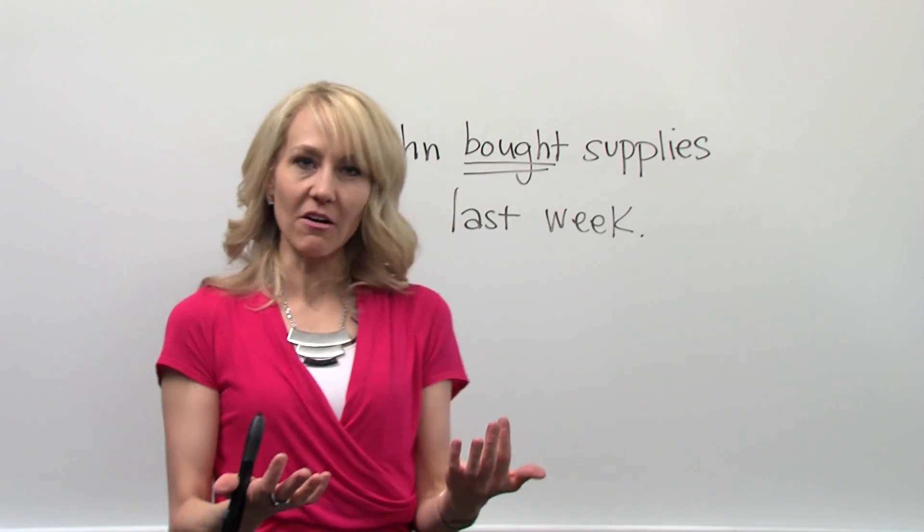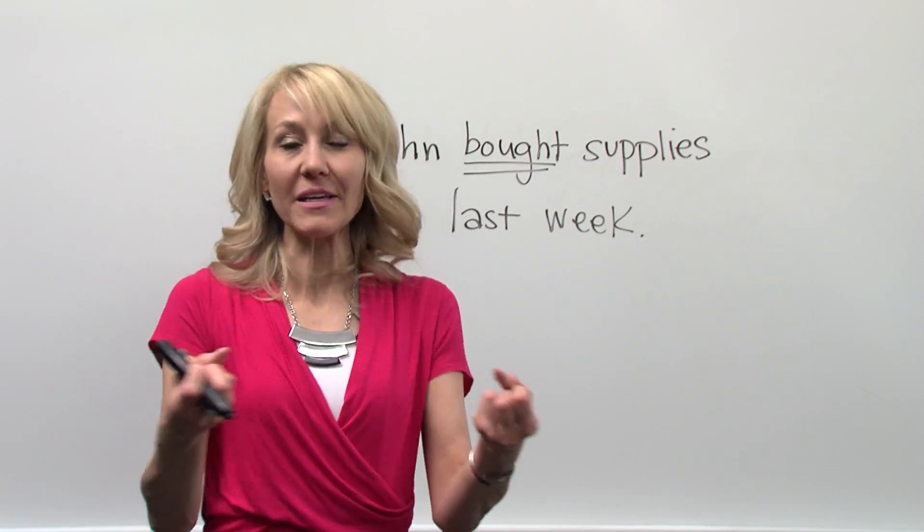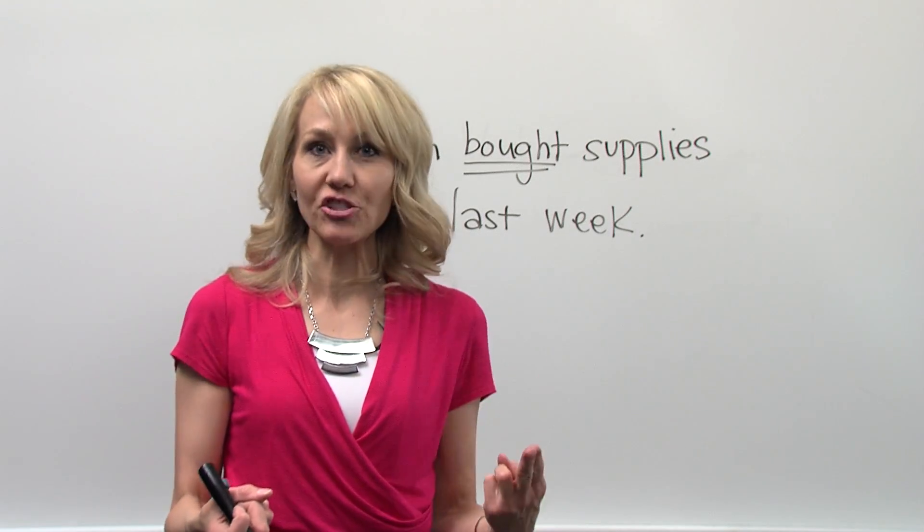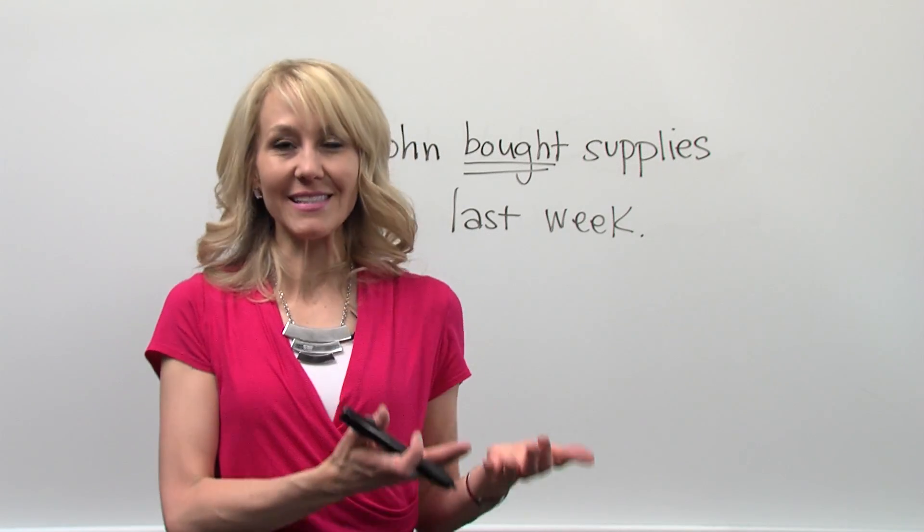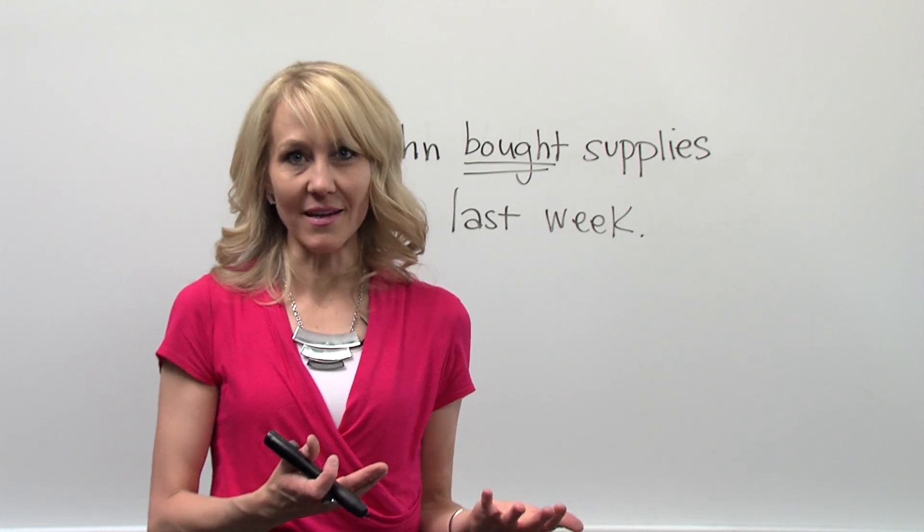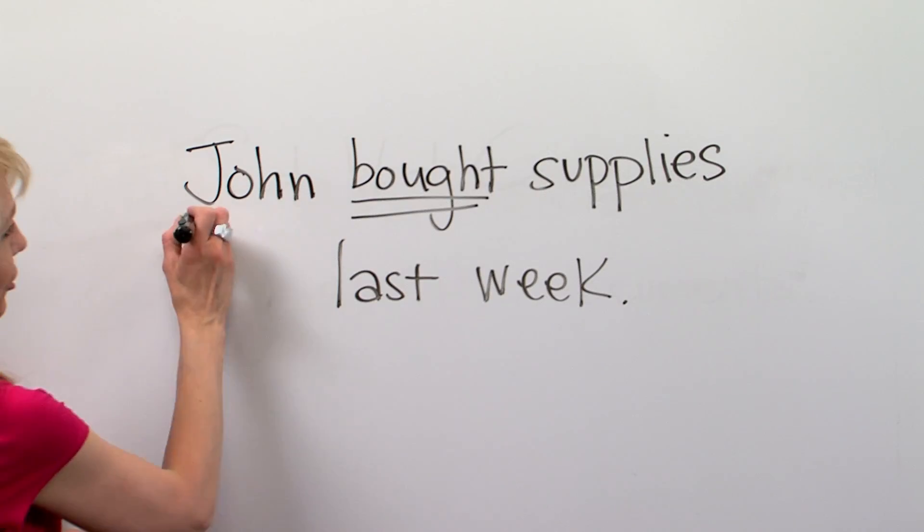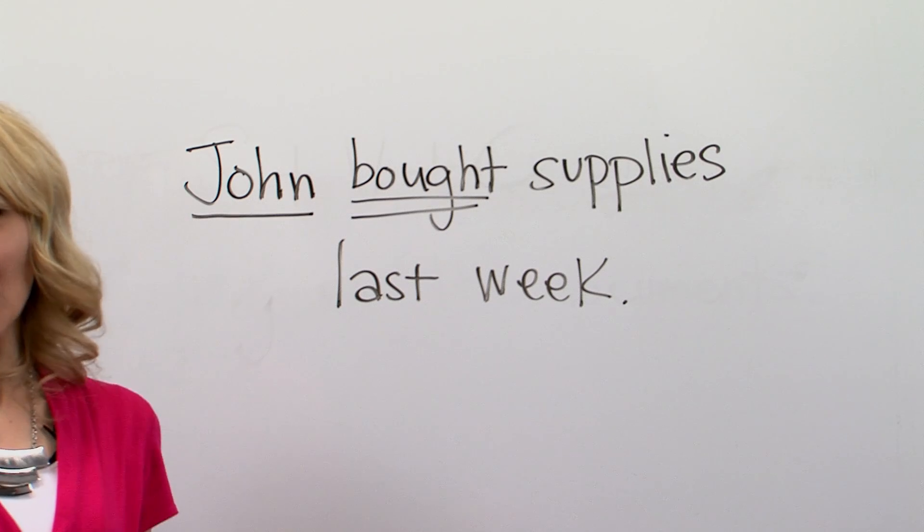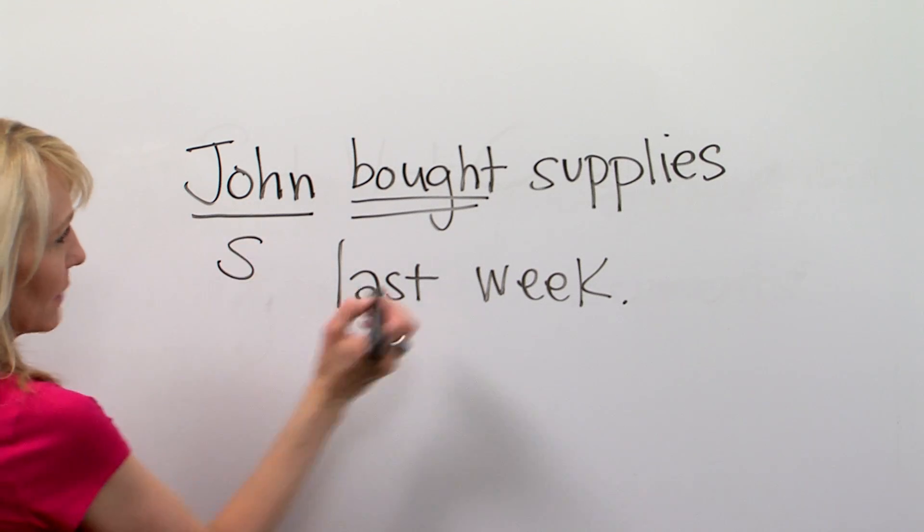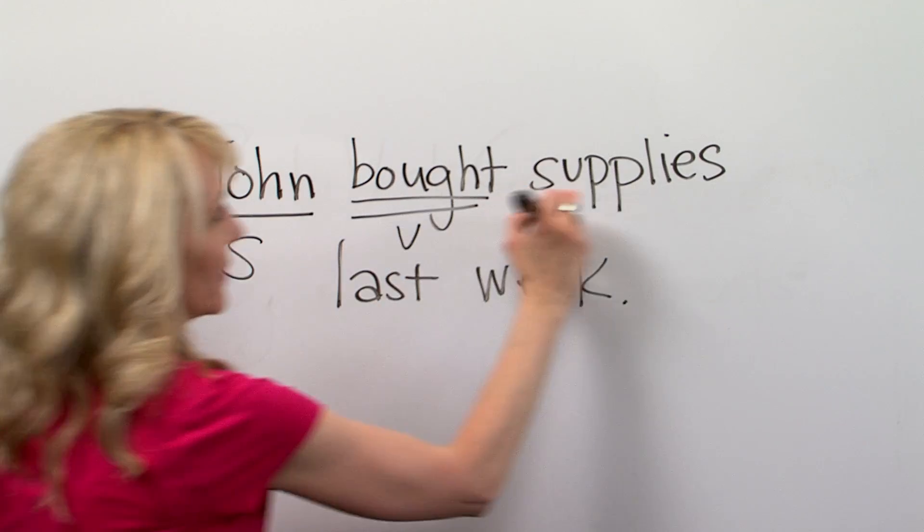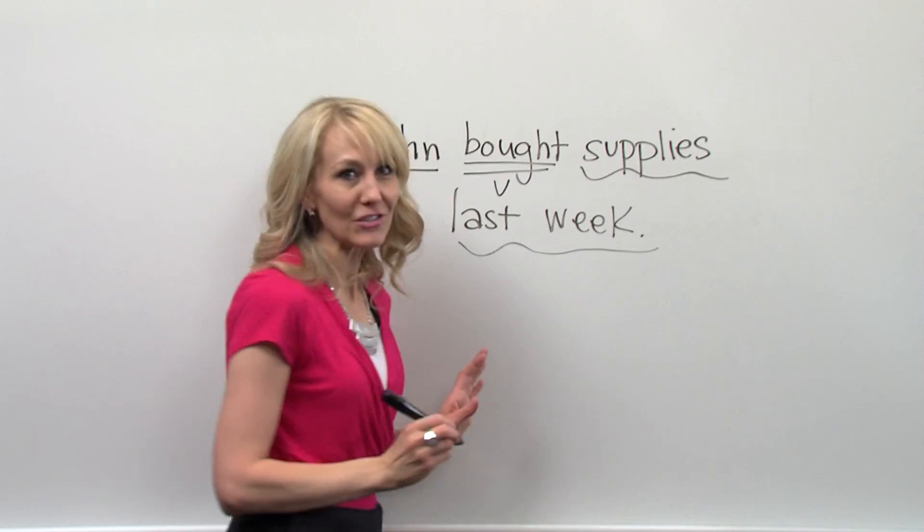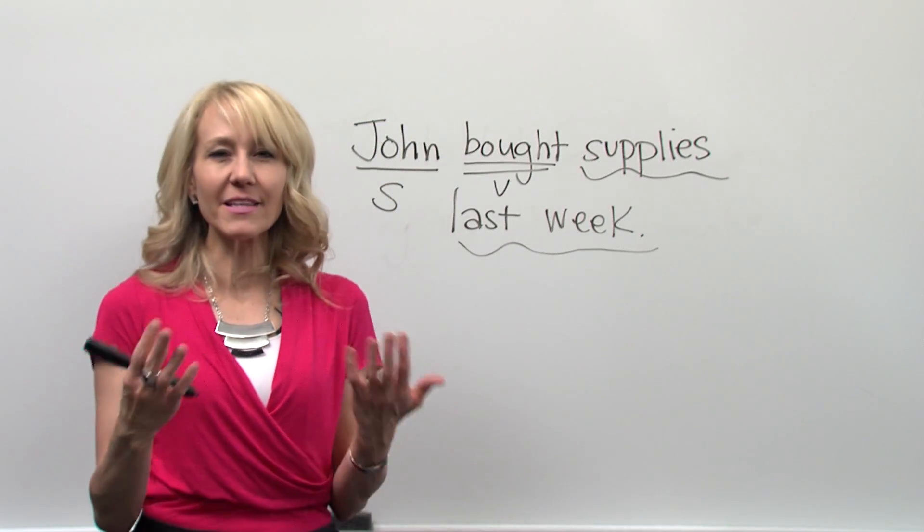Then you ask yourself, okay, what's happening? Well, something's getting bought. The next question to identify the subject is, who's doing this thing that's happening? In other words, who's doing the buying? Well, clearly, it's John. I'm going to underline my subject once. So John is my subject, bought is the verb, and to simplify, everything else is the complement.